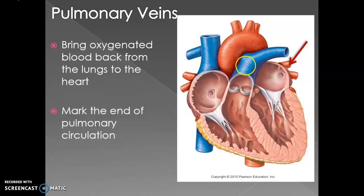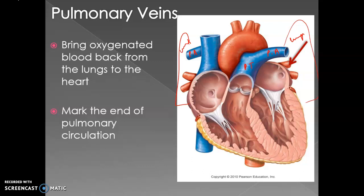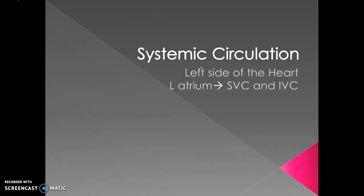The pulmonary arteries carry blood to the lungs. In the lungs, gaseous exchange occurs — carbon dioxide is dumped out and oxygen is picked up. The freshly oxygenated blood returns to the left atrium via four pulmonary veins. The pulmonary veins carry oxygenated blood from the lungs back into the left atrium, and that marks the end of the pulmonary circuit.